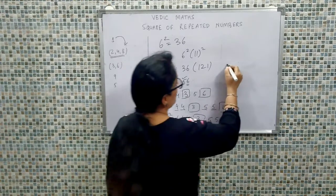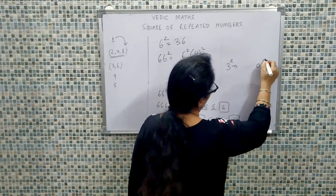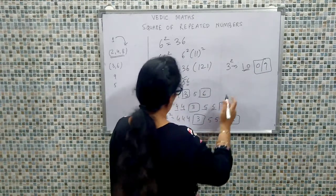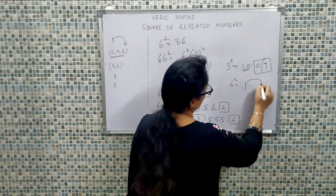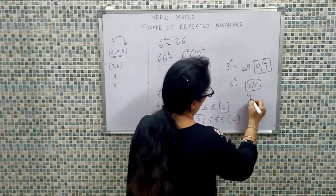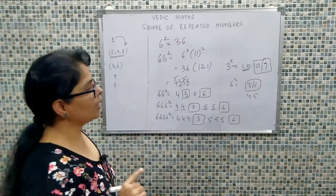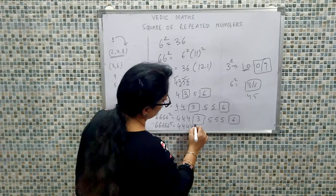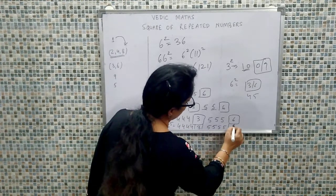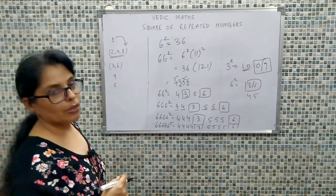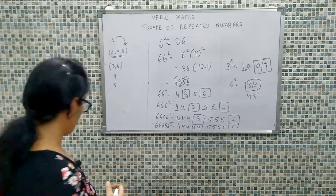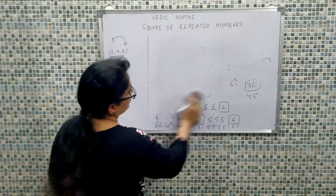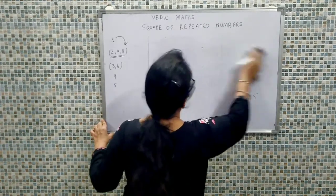So as we have seen, 3 and 6 are fixed positions in the square of repeated 6s. The additional values 4 and 5 are variable and repeat based on how many 6s we have. If we have 5 bar 6, hum likhenge: 4 bar 4, then 3, then 5 five times, then 6. This is the way the square of a repeated value of 6 is computed.